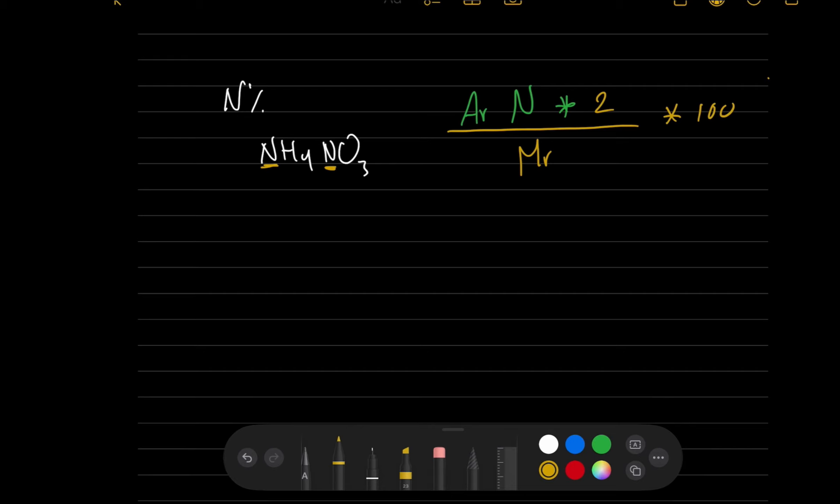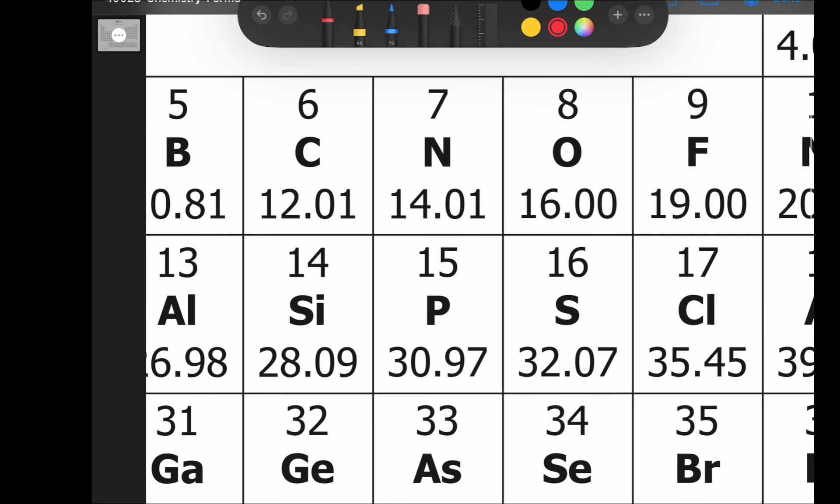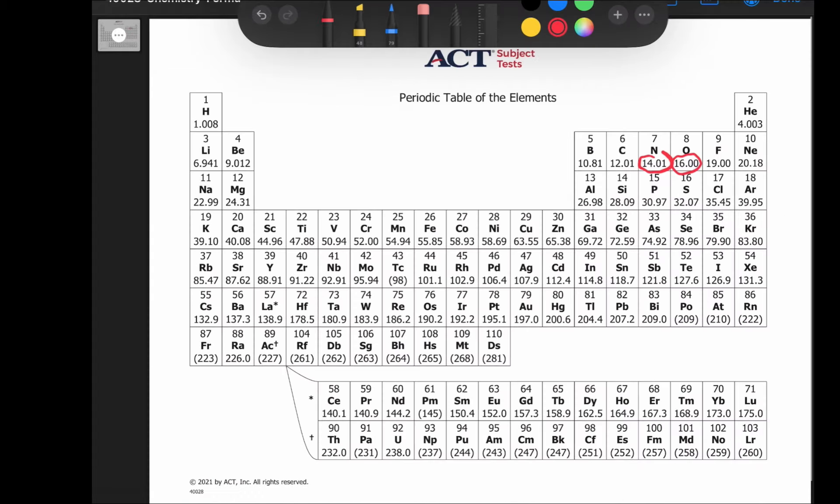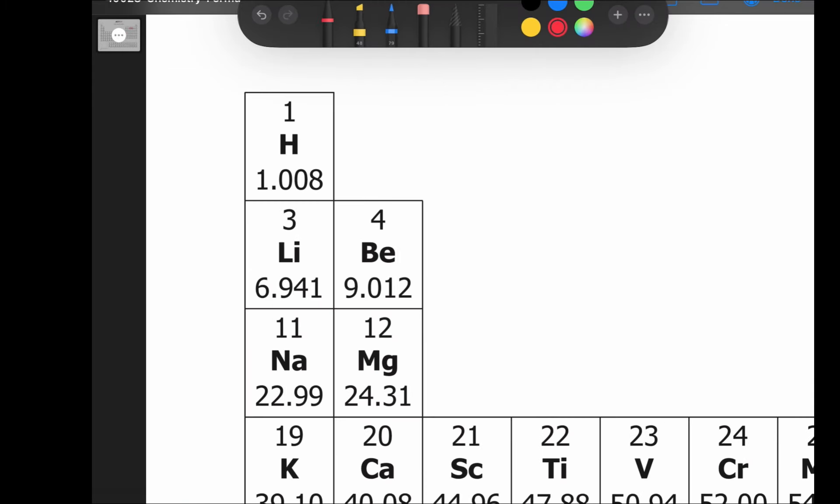Let's go to the periodic table and check the AR of nitrogen and oxygen. Nitrogen has an atomic mass of 14, oxygen is 16, and hydrogen is 1.008.